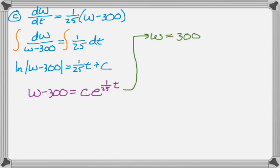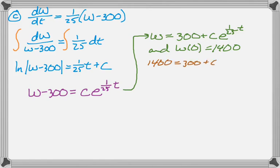Alright, so rearranging that a little bit and throwing in our initial condition, which was w of 0 is 1400. Substitute everything in, get 1400, 300 plus e to the 0 is 1, so we know that C is 1100.